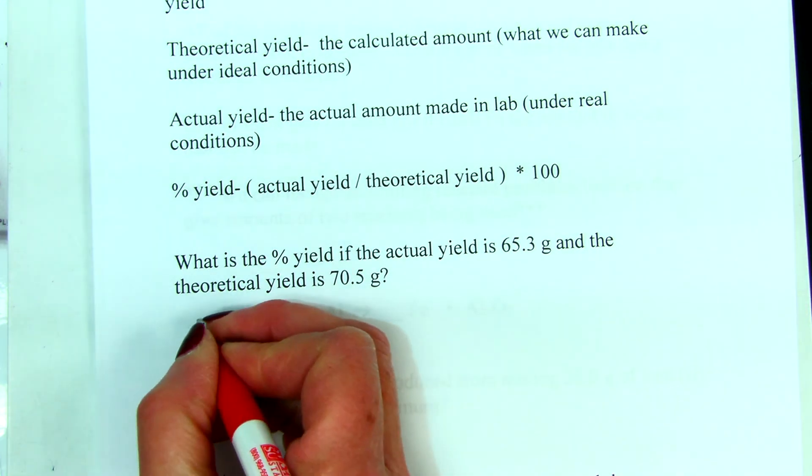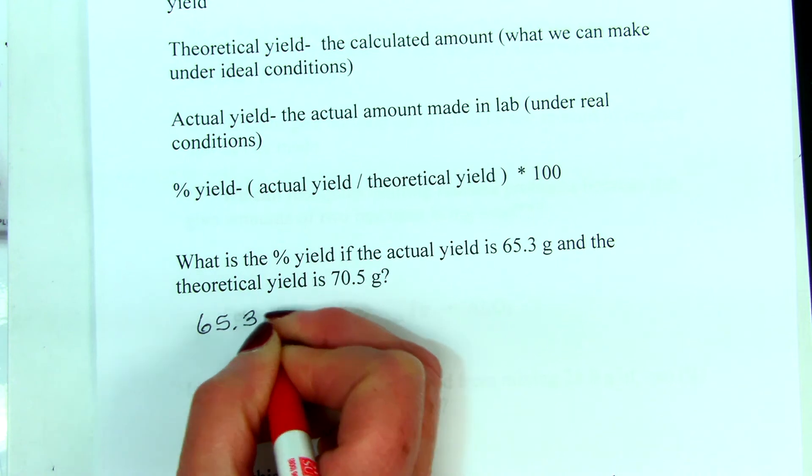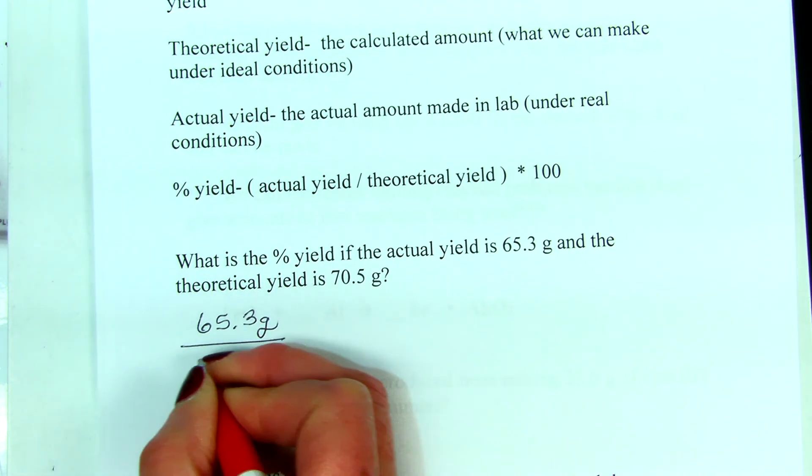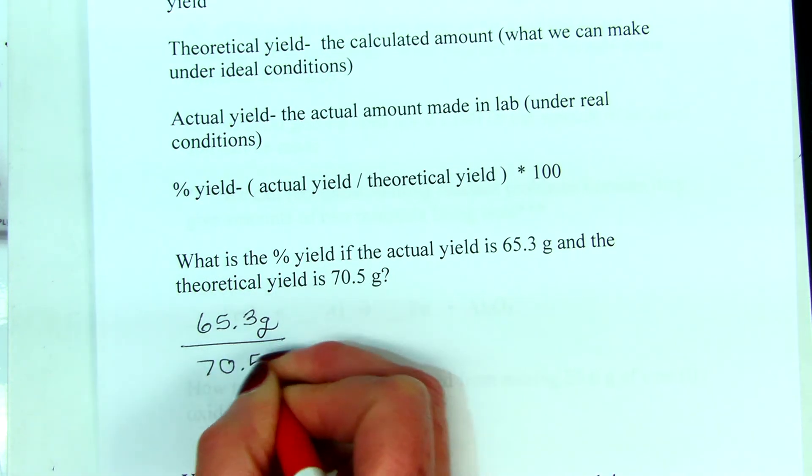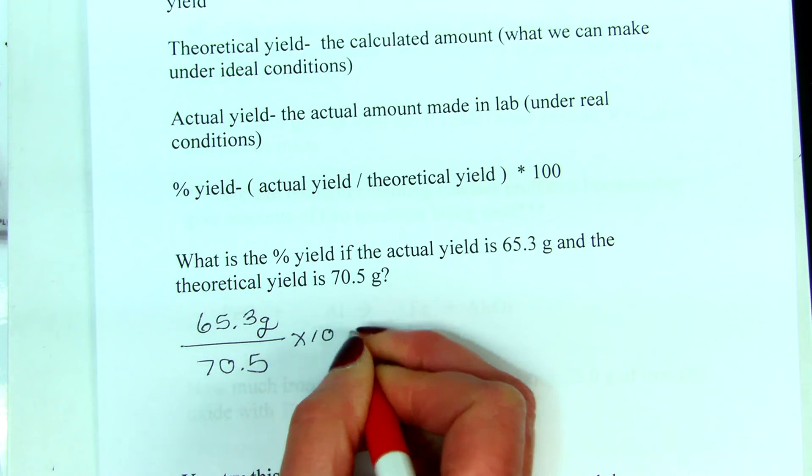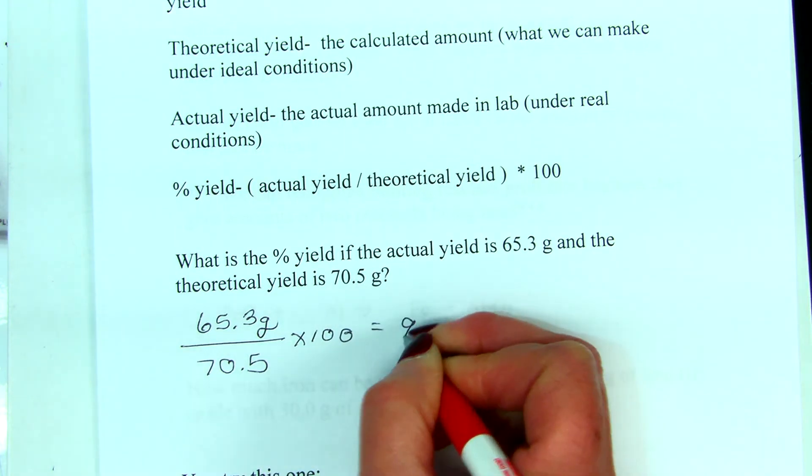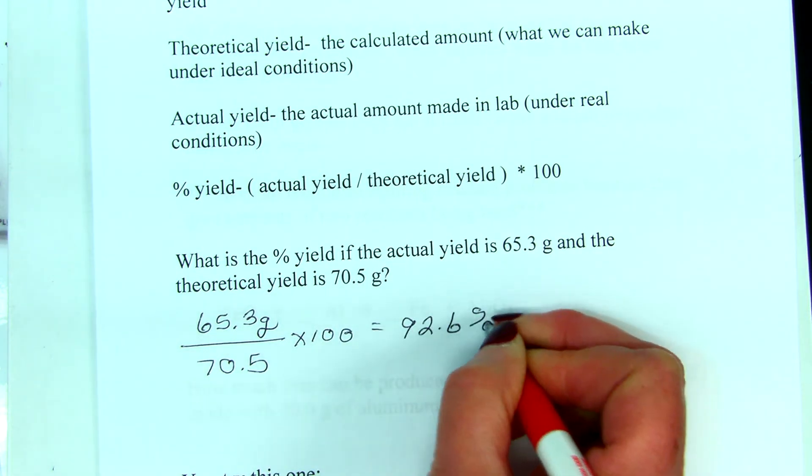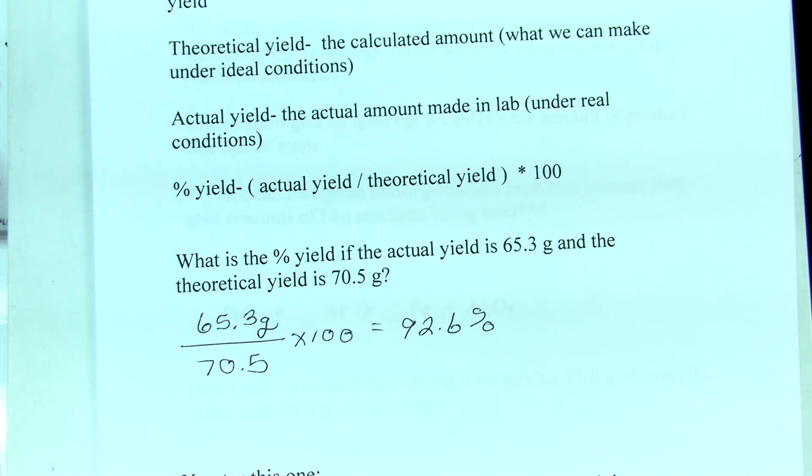Well, the actual yield 65.3 grams divided by the theoretical yield 70.5 grams times 100 gives us the percent yield 92.6 percent.